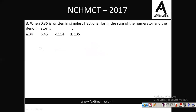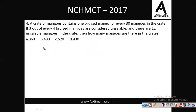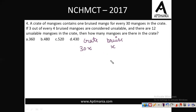Fourth question. A crate of mangoes contains 1 bruised mango for every 30 mangoes in the crate. 3 out of every 4 bruised mangoes are considered unsellable, and there are 12 unsellable mangoes in the crate. How many mangoes are there in the crate? I am assuming there are 30x mangoes total, so x mangoes are bruised. 3 out of every 4 bruised mangoes are unsellable, so bruised mangoes are x.